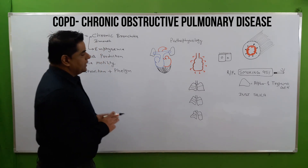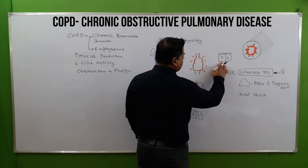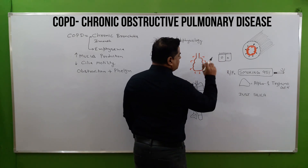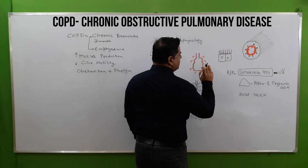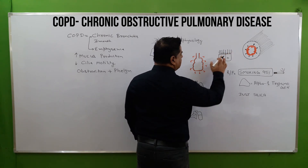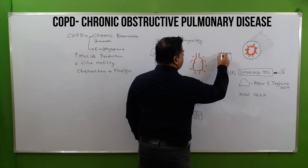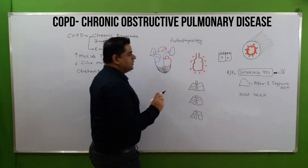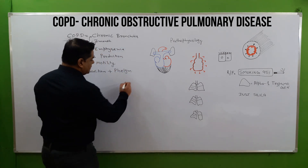In this condition, the cilia present on the goblet cells first have their size or length decreased. When there is less motility of the cilia, the sputum is not able to be carried upward.